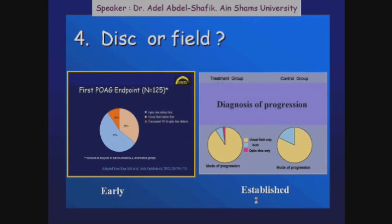Should we follow disc or field changes? In the early stages, as shown in the Ocular Hypertension Treatment Study, disc changes were more commonly used to diagnose glaucoma early. While in established cases, as shown in the Early Manifest Glaucoma Treatment study, field changes are more important to detect progression. So in early stages, disc follow-up is very important, but once glaucoma is established, field changes are more sensitive to pick up progression.